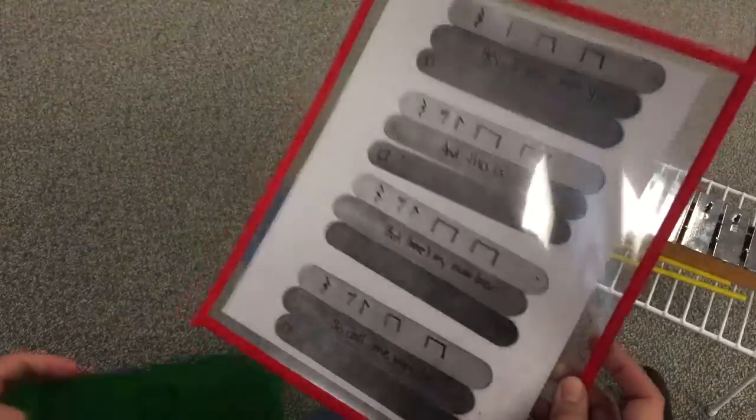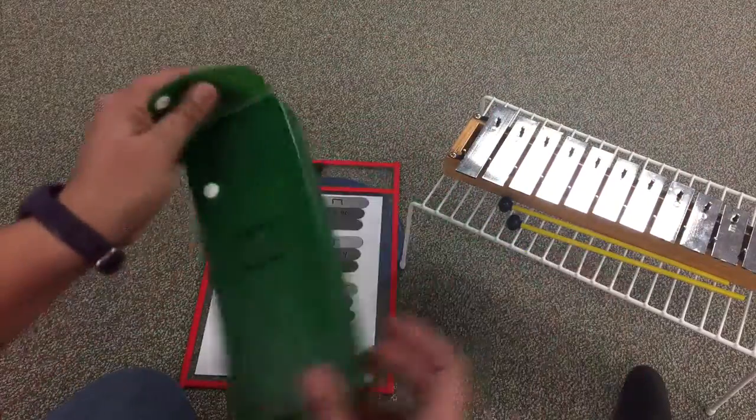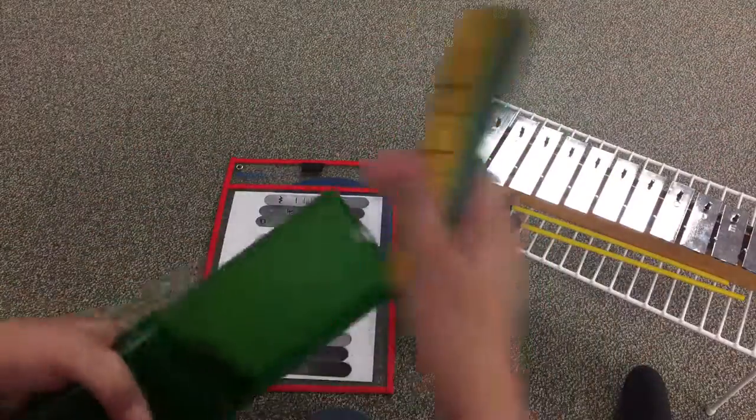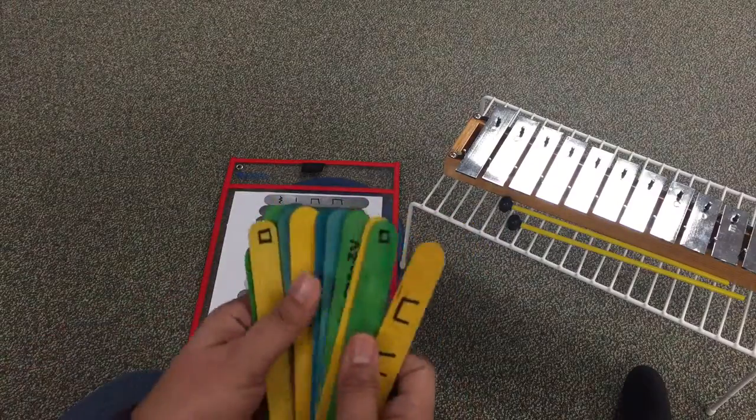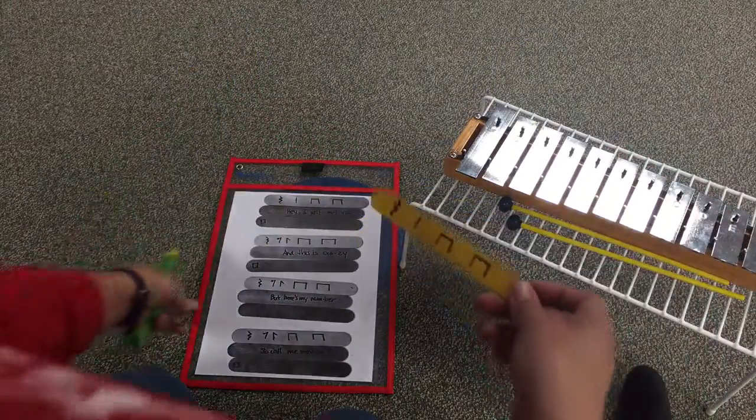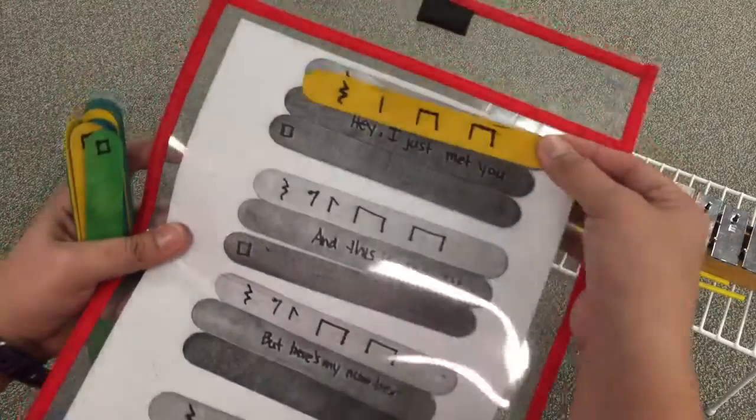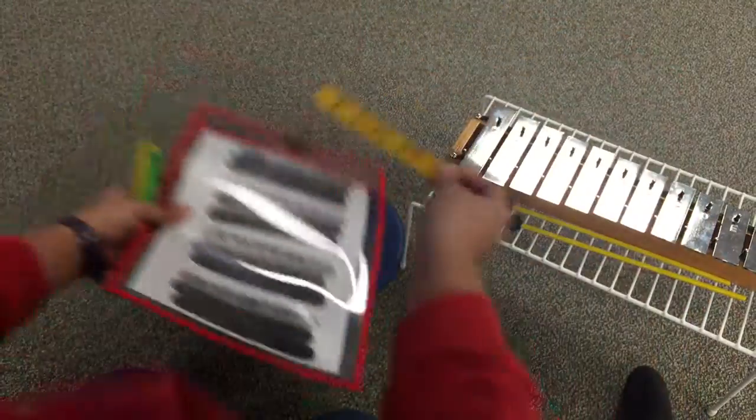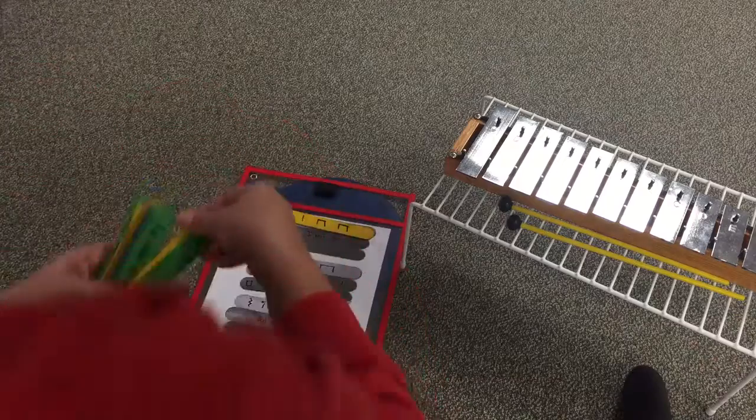I kind of did two of the steps for you already. In this box there are popsicle sticks - you have yellow and green and blue. The yellow is the one with the rhythms on them, so what you're gonna do is you're gonna match them up here like so.